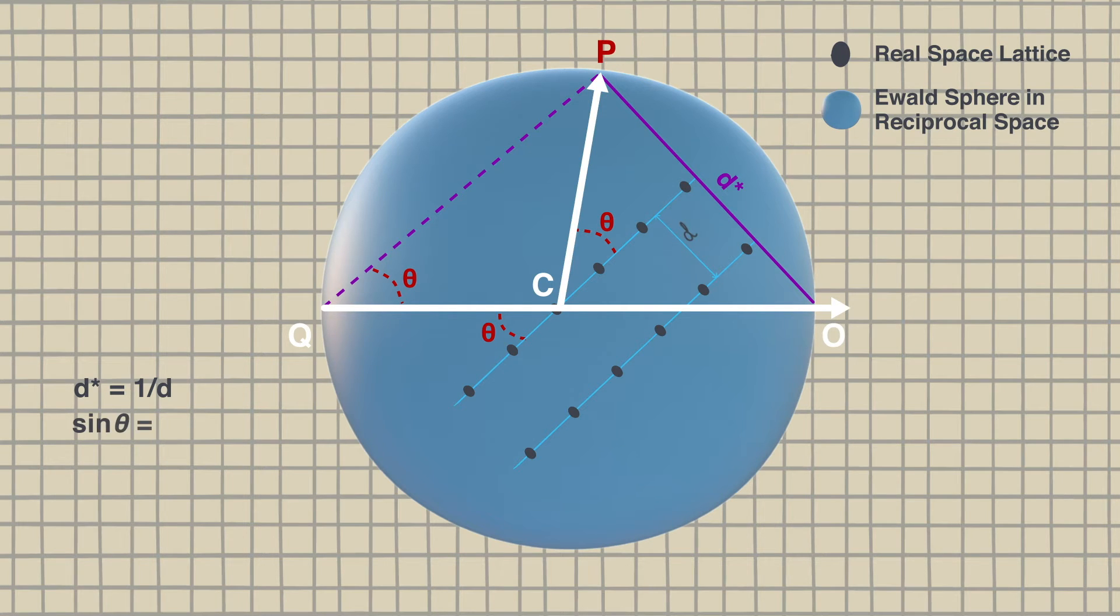Sine theta is the distance OP over OQ. We know that the radius of a reflecting sphere is 1 over lambda which makes the distance OQ 2 over lambda while the distance between OP is 1 over D. That makes sine theta to be 1 over D over 2 over lambda that is lambda over 2D. So now we have defined Bragg's law again using the concept of reciprocal space not real space.